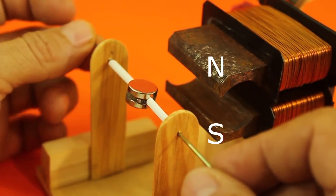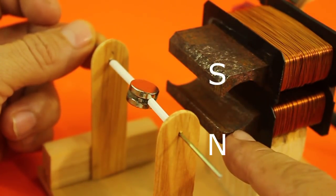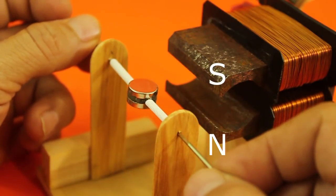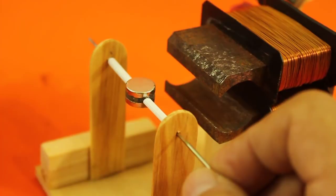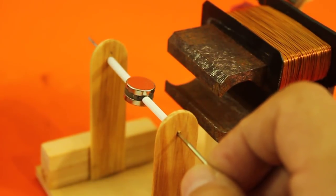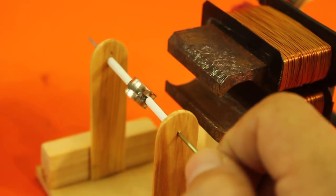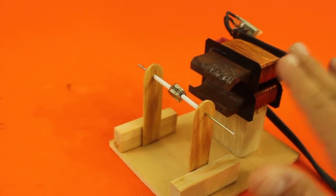Then when the AC changes polarity and here we have south and down north the magnet will rotate to align with the new polarity. And this cycle repeats 60 times per second and the rotor will move. Then I am going to power it and let's see.